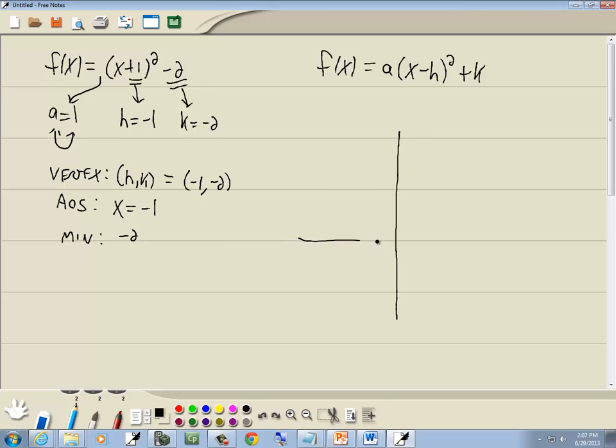Now for the graph. (-1, -2) is my vertex, so I'm going to put a point there. The y-intercept is almost always a good one to pick. So if I put 0 in for x, I'm going to have (0+1)² - 2. 0+1 is 1, 1 squared is 1, so we've got 1-2, or -1.